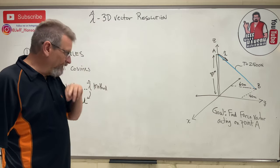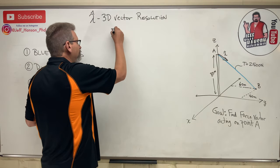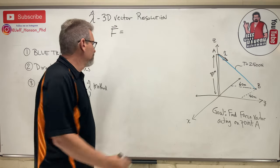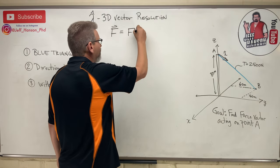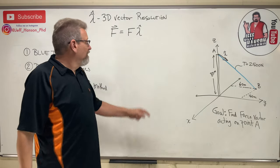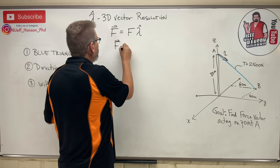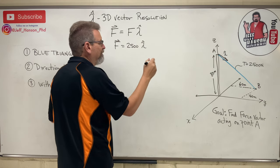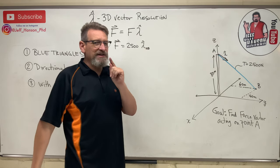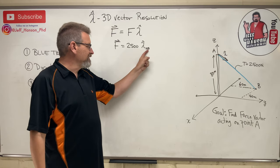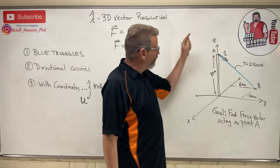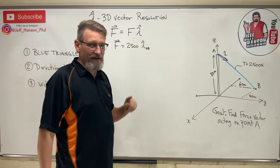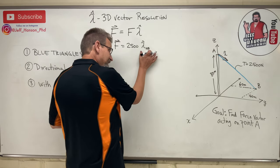So to use the lambda hat method, you need to know this. Vector F is equal to, there's another equation, but it's super easy. That says vector F. What is a vector? Vector has magnitude and direction. So in this case, vector F is equal to 2,500 times lambda hat, and I'm going to call it lambda hat AB. And I like to be very intentional in 3D. I like to be very intentional about the way that I use those letters. Because that force vector goes from A to B. So I'm going to call it AB. If it went from B to A, I would call it BA. And I'll tell you why right here.